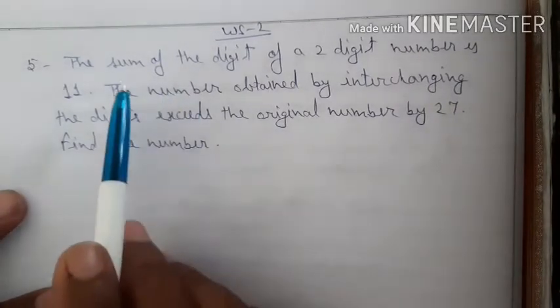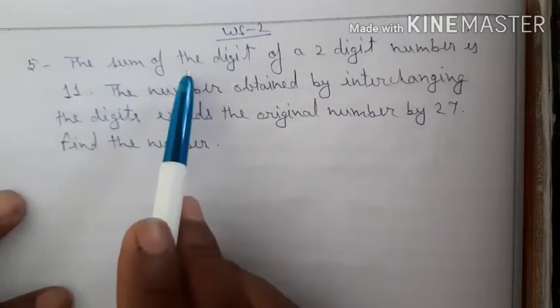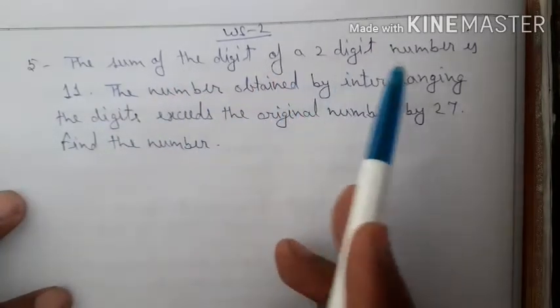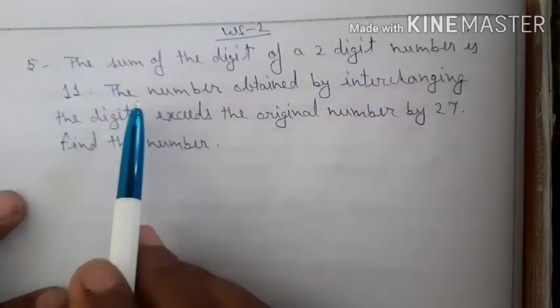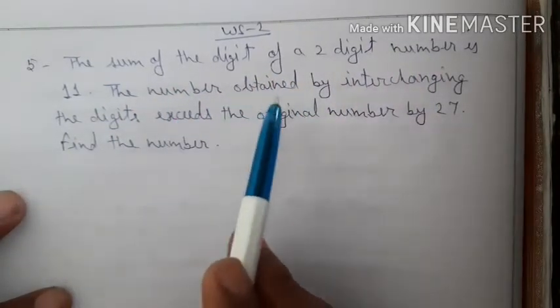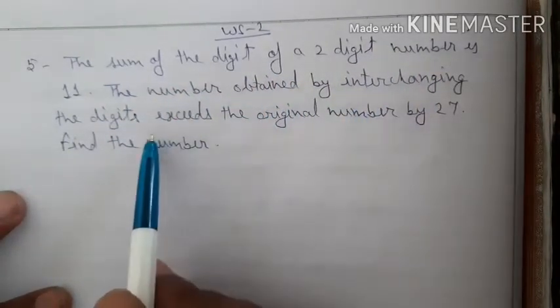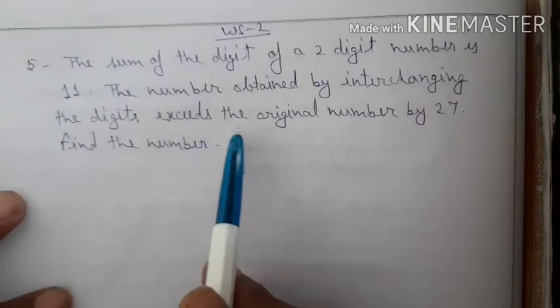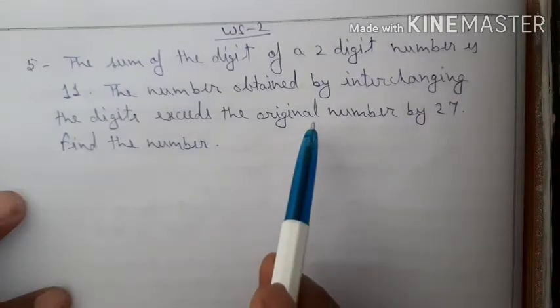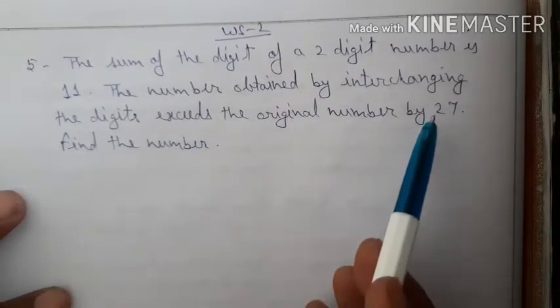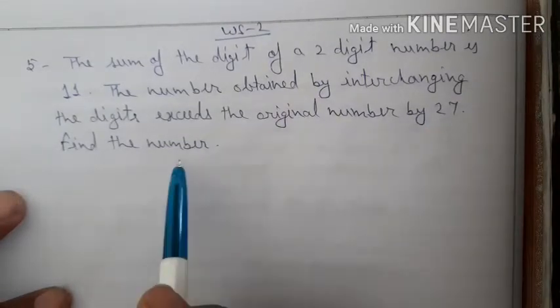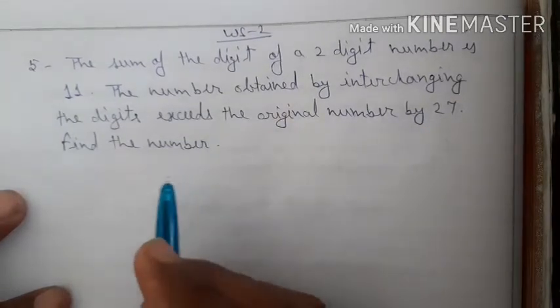The sum of the digits of a two-digit number is 11. The number obtained by interchanging the digits exceeds the given number by 27. Find the number.